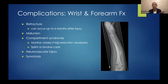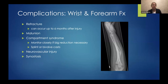Complications — this could be a whole other talk — include refracture, premature physeal arrest of the distal radius, malunions, compartment syndromes, neurovascular injury, and synostosis, especially as you get more proximal in the forearm.